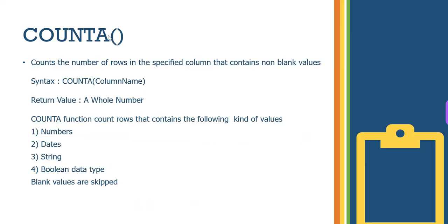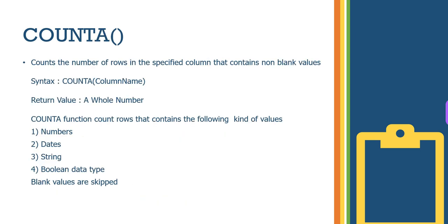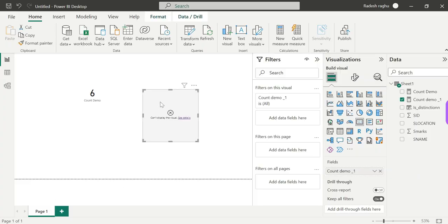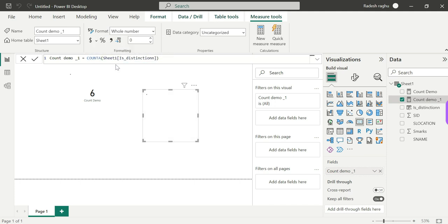COUNTA — the A stands for all. Don't confuse yourself, A stands for all. COUNTA counts the number of rows in a specified column that contains non-blank values. Everything is the same as COUNT, but the key difference is that Boolean data types are accepted here. Boolean data types are accepted, and blank values are still skipped. So everything is same, just Boolean is now supported. Let's see — it will work perfectly.